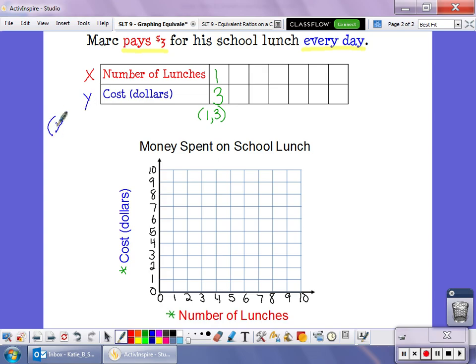And together, when you create an ordered pair, x comes first, y comes second. So that's why it's one comma three. So if we order one school lunch, it costs us three dollars.